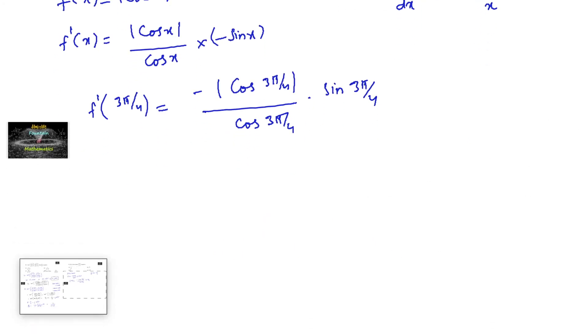So f'(3π/4)—3π/4 is π minus π/4, that's in the second quadrant. So cos is negative, so minus cos π/4 divided by minus cos π/4 into—second quadrant sin is positive—so you will get sin π/4.